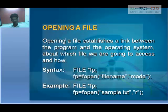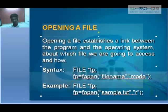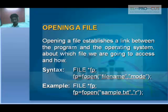Opening a file establishes a link between the program and the operating system, specifying which file we are going to access and how. Use the file pointer and fopen to create a file along with the mode and place it into the pointer. So fopen takes sample.txt and mode 'r' as arguments.